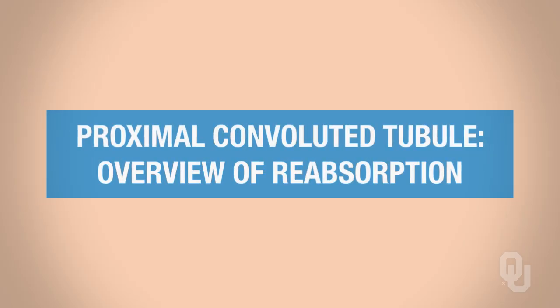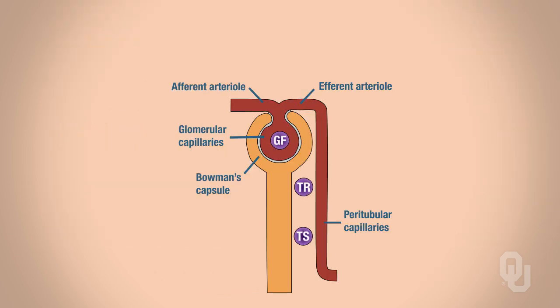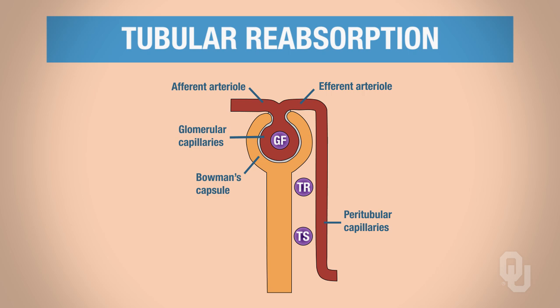We're going to start by talking about the proximal convoluted tubule, since that's the first place that the filtrate enters when it leaves the glomerulus. We're talking about tubular reabsorption. At the glomerulus, we filter stuff, and it ends up in the renal tubule. We want to reabsorb it — put it back into the blood. That's the whole point of doing this.